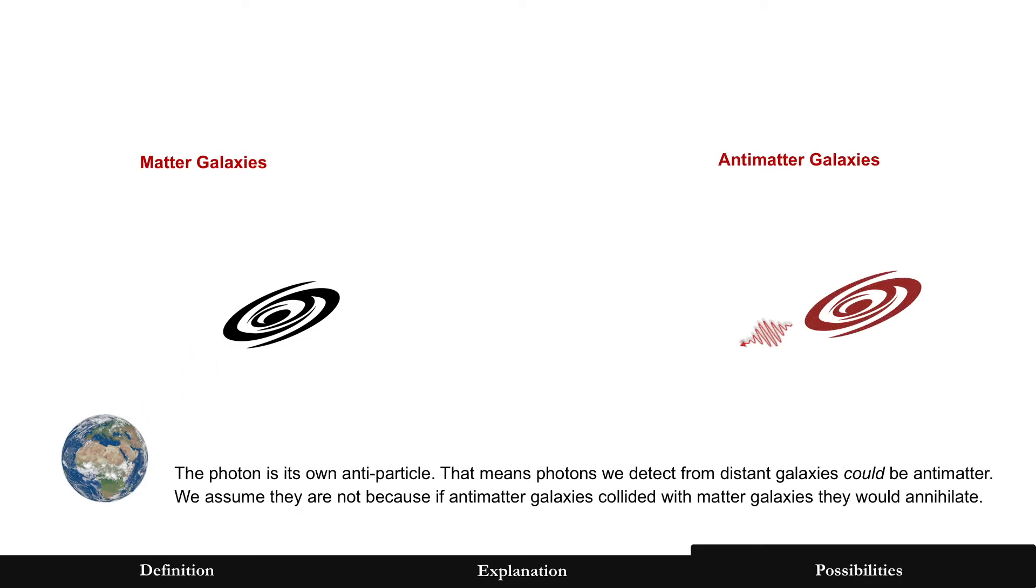Now, the interesting thing, though, is that the photon is its own antiparticle. It doesn't matter if it's generated from regular matter or antimatter. A photon is just light to us. And so what makes this interesting is that the distant galaxy actually could be antimatter. We wouldn't know it.